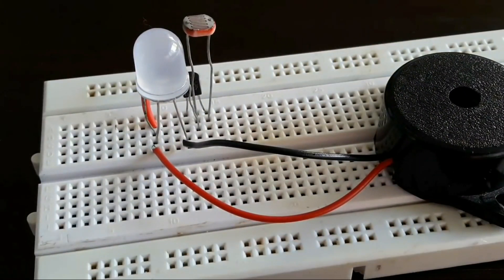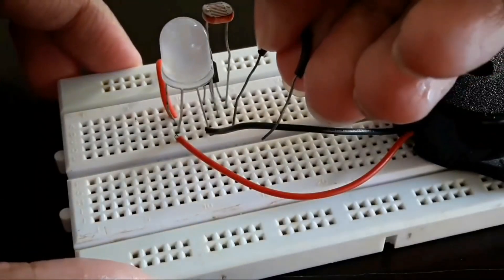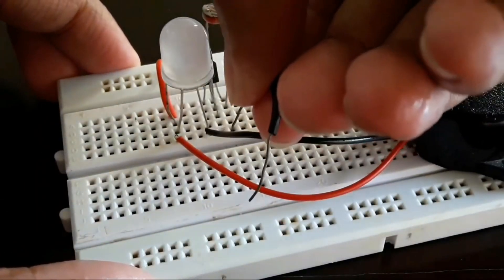Connect another wire from the emitter of the BC547 transistor to the negative rail of the breadboard.